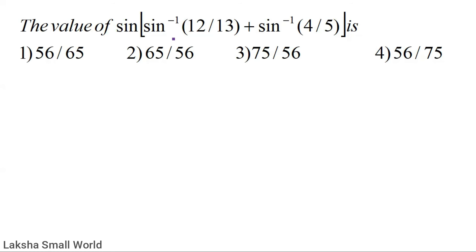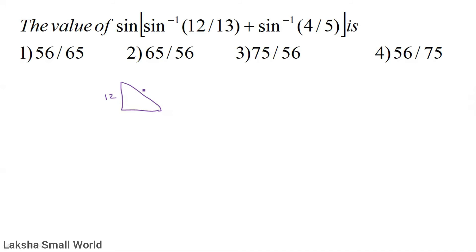Find the value of sin⁻¹(4/5) + sin⁻¹(12/13). Use the sin inverse addition formula sin(A+B) = sin A·cos B + cos A·sin B. Draw the first triangle: sin A = 4/5, so opposite = 4, hypotenuse = 5, adjacent = 3. For sin B = 12/13, opposite = 12, hypotenuse = 13.